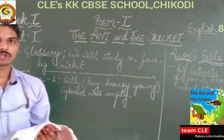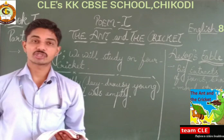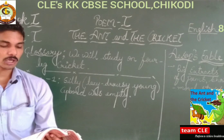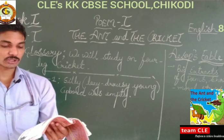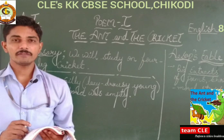So in the first stanza, the cricket wasted his time in the pleasant summer days, and when winter came he checked his cupboard and found nothing. He complained about this. Now comes the second stanza: 'Not a crumb to be found on the snow-covered ground, not a flower could he see, not a leaf on a tree.' In the winter, everywhere is covered — no food, no flowers, no leaves.